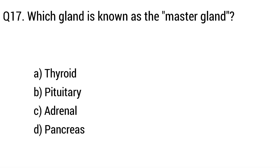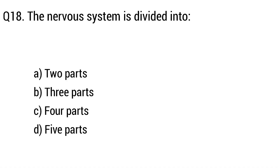Question 17. Which gland is known as the master gland? The right answer is Option B: Pituitary gland. Question 18. The nervous system is divided into. Option A: 2 parts. B: 3 parts. C: 4 parts. D: 5 parts. The right answer is Option A: Two parts.